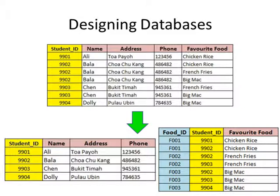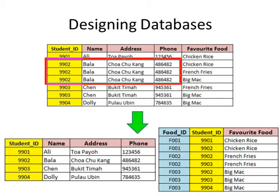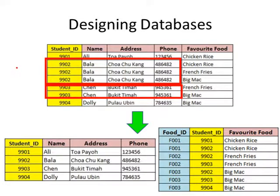This is the set of databases we used in chapter 2. The table on top represents the table before normalization, and the tables below on the left and right represent the tables after normalization. The result of normalization is that we reduce the duplication of information so we do not store unnecessary data, which reduces the size of the database and speeds up operations.